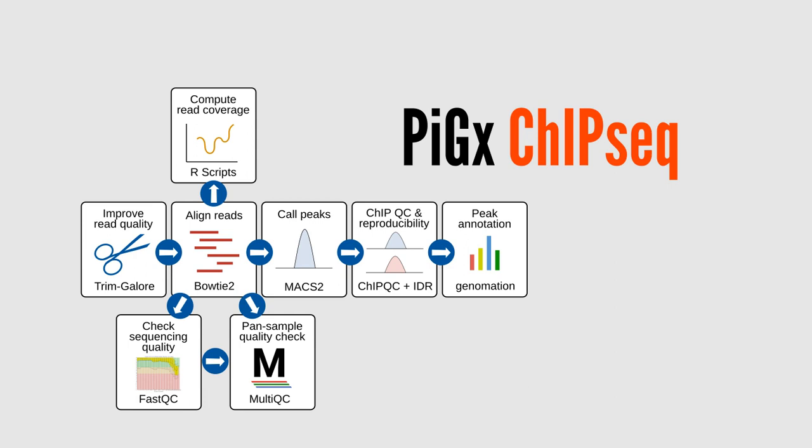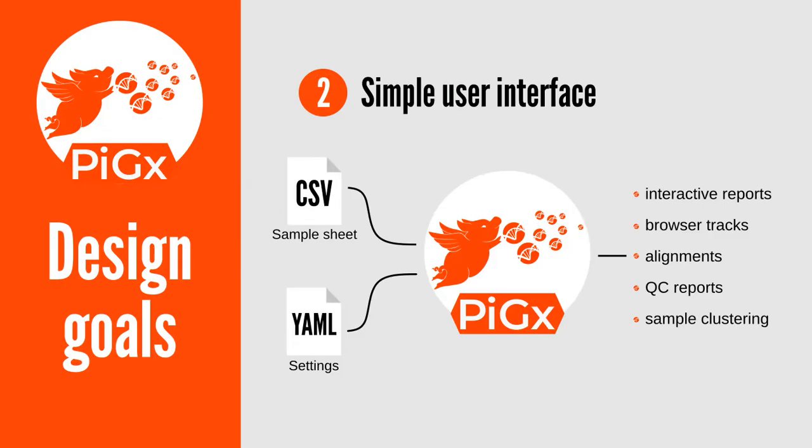Users don't need to know any of this. We wanted to empower our friends in the wet lab, who are not bioinformaticians, to see patterns in their own data even without the help of experienced bioinformaticians. To this end, all pipelines provide a consistent and intuitive interface. The only inputs to the pipelines, other than the raw data, are a sample sheet describing the experimental design and a settings file to overwrite defaults. As its output, it generates an HTML report with interactive plots. For advanced users who want to tweak the output for publications, it also generates R session files.